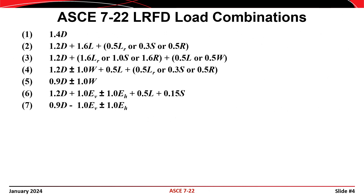Here are the seven load combinations that we're going to use for this example. These combinations come from the 2022 edition of the ASCE7 standard. Note that I've included a coefficient of 0.5 on the live load in combinations 3 and 4, which is permitted in the ASCE7 standard when the unreduced live load does not exceed 100 pounds per square foot.